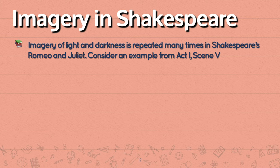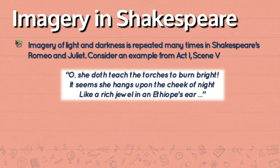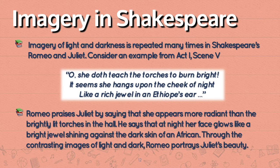Imagery in Shakespeare. Imagery of light and darkness is repeated many times in Shakespeare's Romeo and Juliet. Consider an example from Act 1, Scene 5: 'Oh, she doth teach the torches to burn bright. It seems she hangs upon the cheek of night, like a rich jewel in an Ethiope's ear.' Romeo praises Juliet by saying she appears more radiant than the brightly lit torches in the hall, and that her face glows like a bright jewel shining against the dark skin of an African.